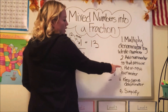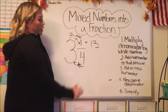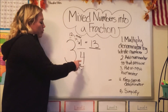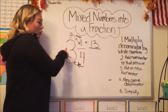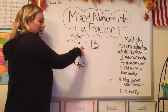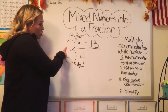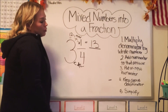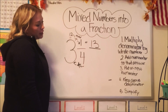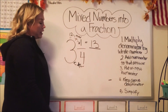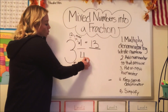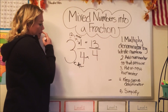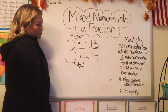Step three says put as new numerator. So 13 is going to be our new numerator. We multiplied the denominator by the whole number and then we added the numerator — four times three is 12, plus one is 13. Step four: keep the same denominator. Our denominator was four, so we just move that over. And now we have 13 fourths.